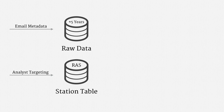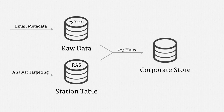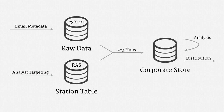Go figure. The raw data got checked against the targeting criteria in the station table. Metadata up to two or three hops away from the target was moved into yet another database — I'll return to this notion of hops in a moment. The new database, in NSA lingo, was the corporate store. You really can't make this stuff up. Within the corporate store, analysts could pore over the email metadata, and they could distribute what they learned in accordance with some minimization procedures.